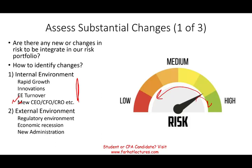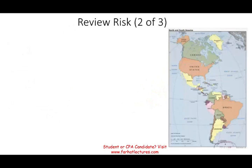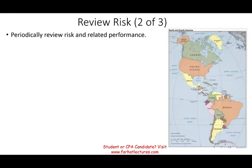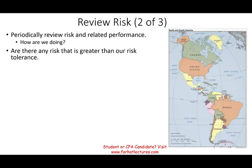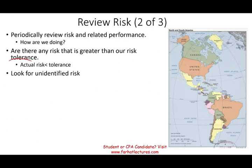So you want to constantly be assessing any substantial changes. A case in point: COVID-19 — that's a huge risk, external to your environment, and you have to deal with it. After assessing substantial changes, you have to periodically review risk and related performance. It's not something you do once and forget — you have to review it on a constant basis. Are there any risks becoming greater than our risk tolerance? The actual risk has to be less than our risk tolerance. You also have to look for any unidentified risk.